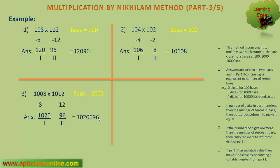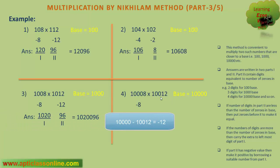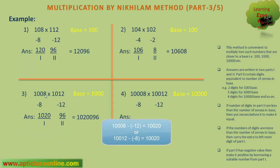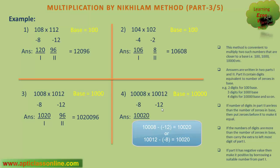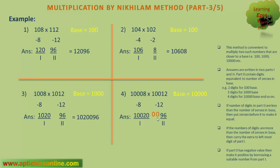If you practice it, you don't have to do all these calculations — you can directly write the answer by doing mental calculation. The base for this multiplication is 10000. Now, 10008 is minus 8 less than 10000, and 10012 is minus 12 less than 10000. Then we can write down the answer as in our previous examples. The first part is the difference of 10008 and minus 12, that is, 10020. The second part is the multiplication of minus 8 and minus 12, that is, 96. As the base contains 4 zeros, we have to put 2 zeros before 96 to make it a 4-digit number. So the final answer is 100200096.